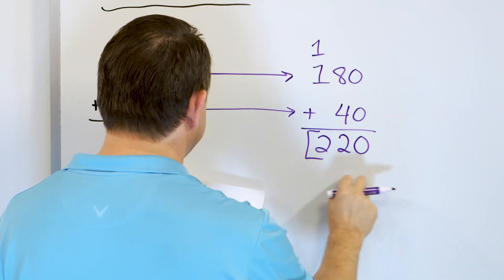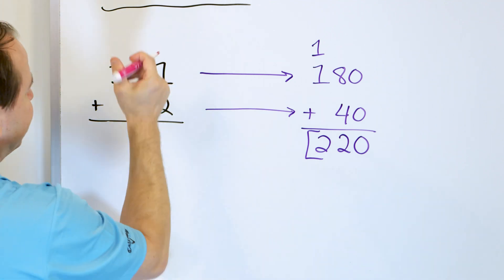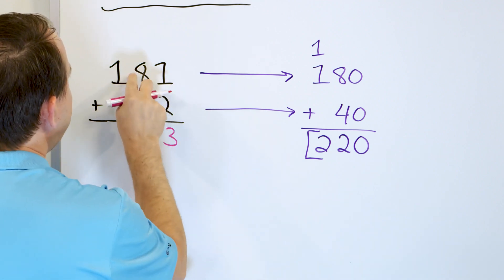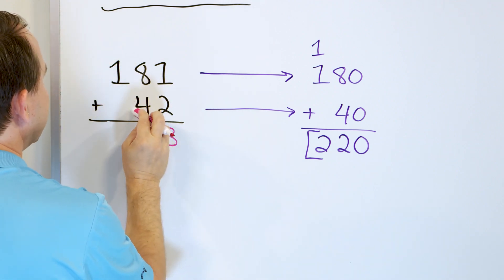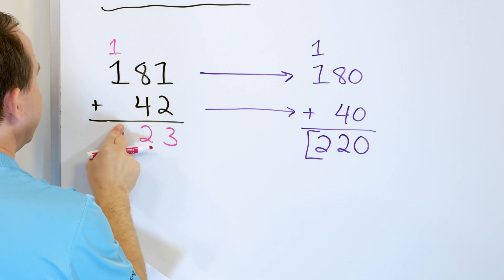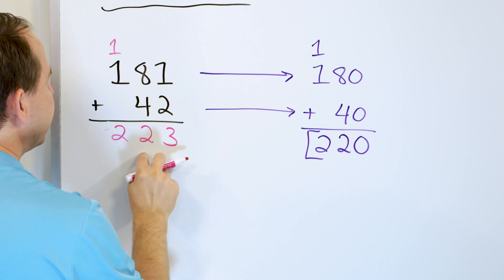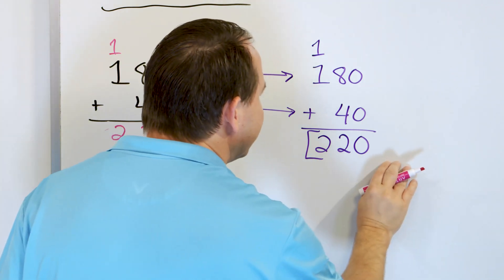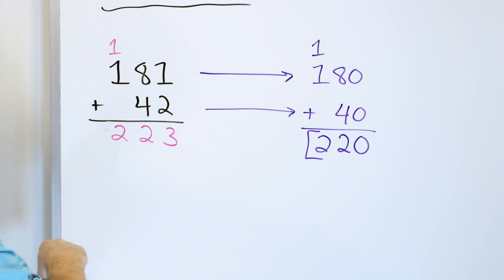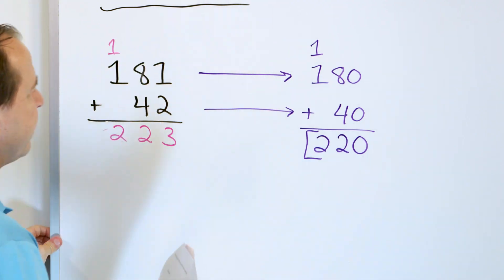So the estimate for this addition is 220. The real answer is 223, but the estimate was 220. You see it's pretty close, but look how easy this addition is — much, much easier to do.